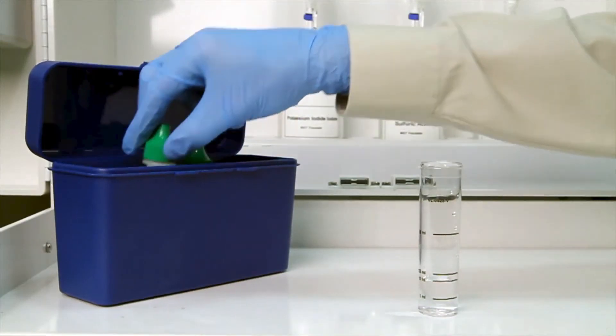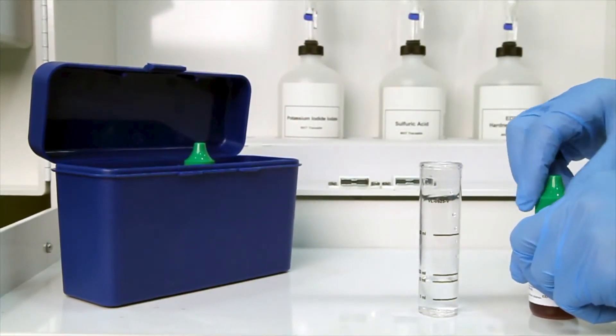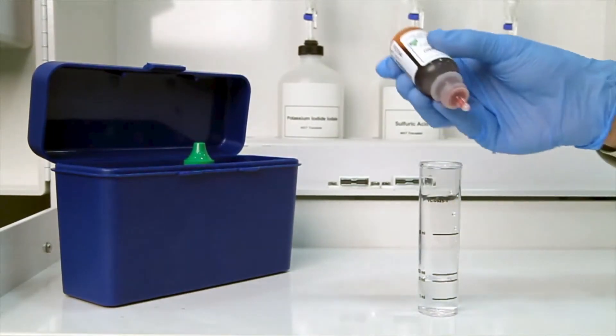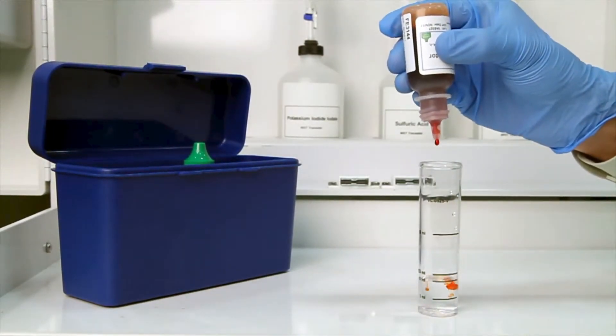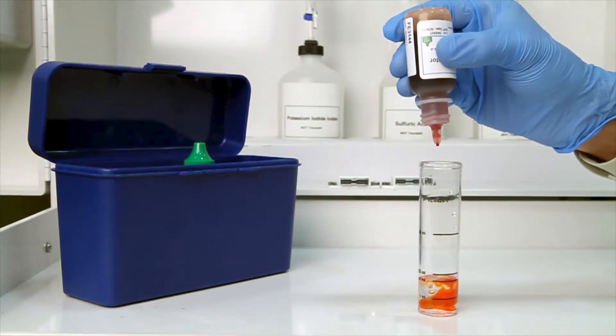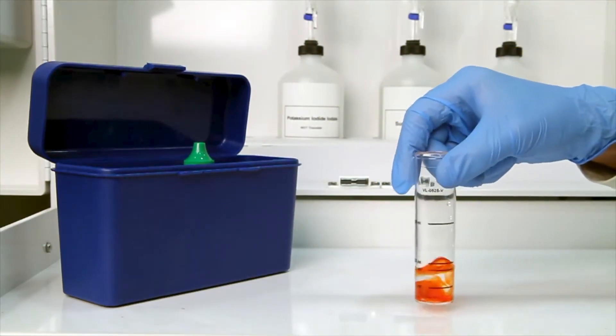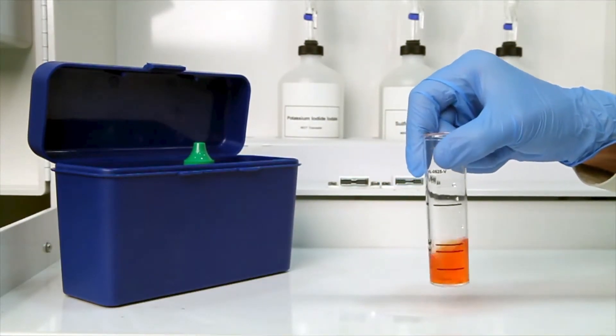Once you have collected an accurate sample, the next step is to add eight drops of ferroin indicator. The bottle contains a dropper tip, so it's important to hold the bottle vertically to get a consistent drop size. After the addition of each reagent, it's important to swirl the vial to make sure the reagents are properly mixed. The sample should turn orange.